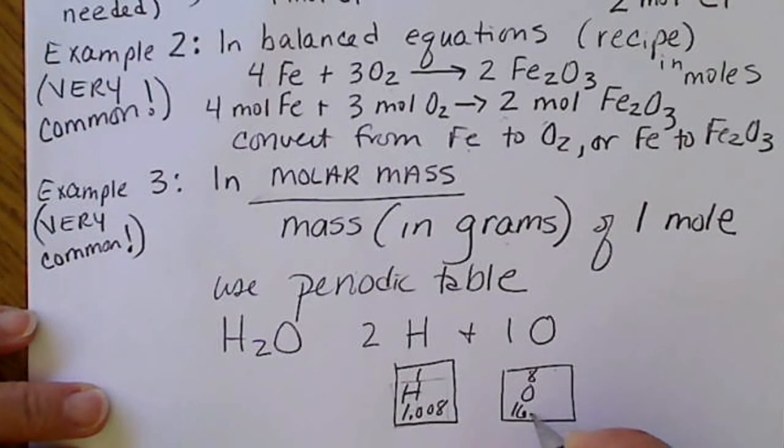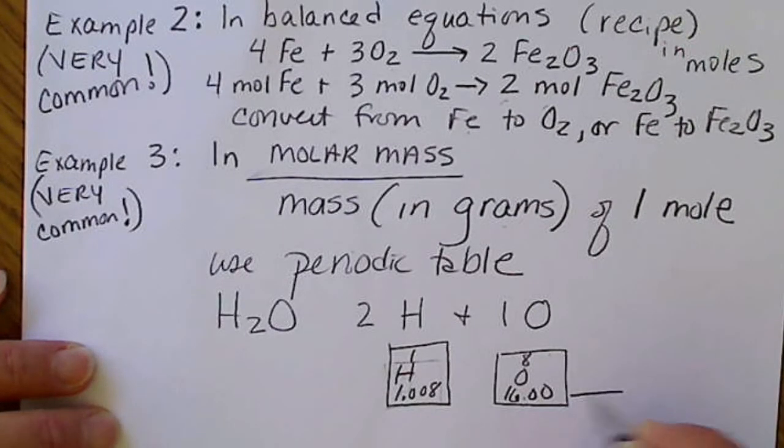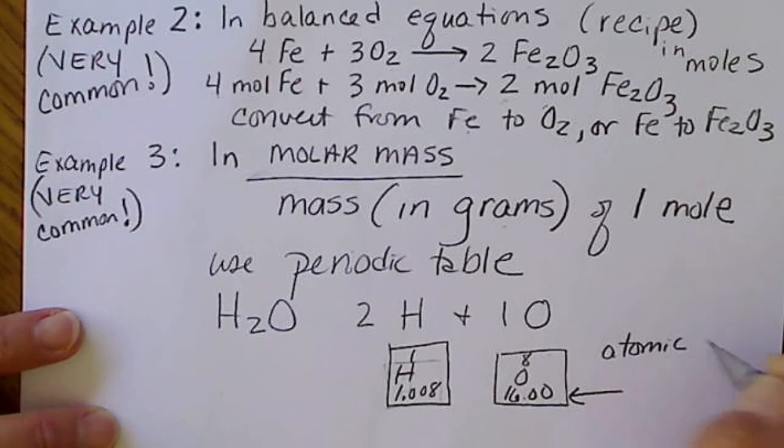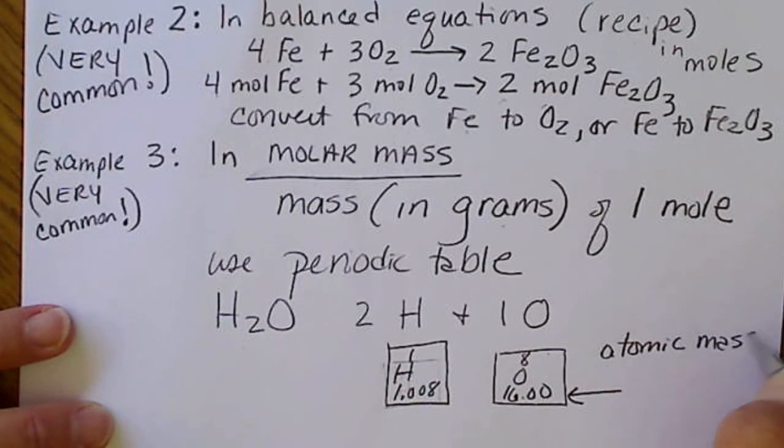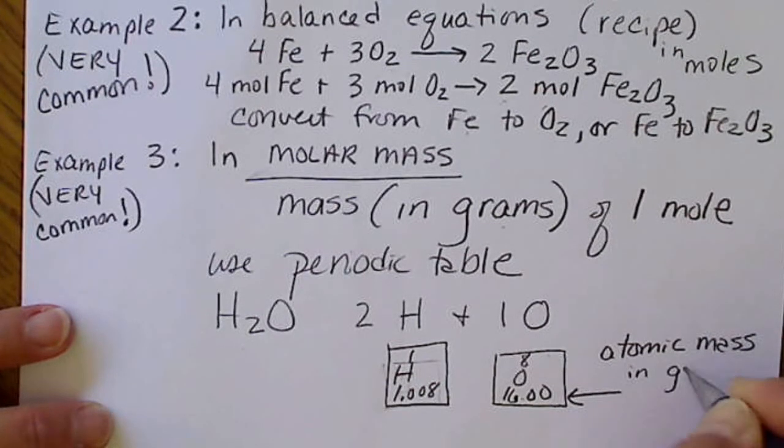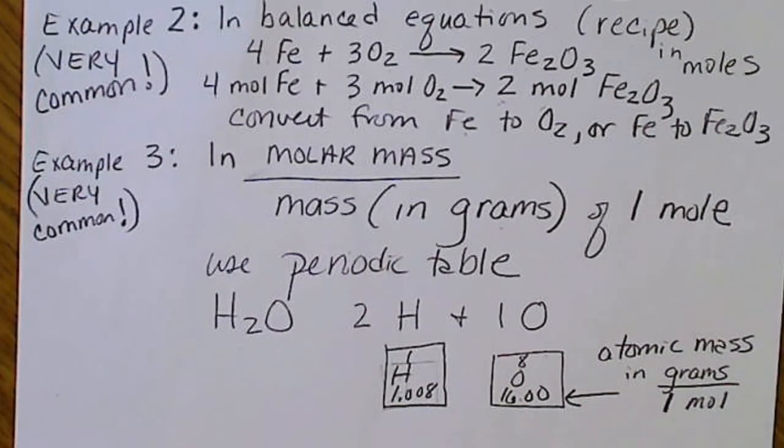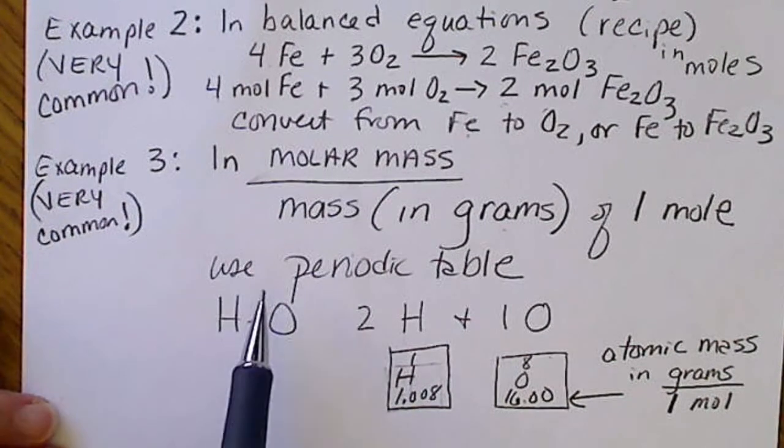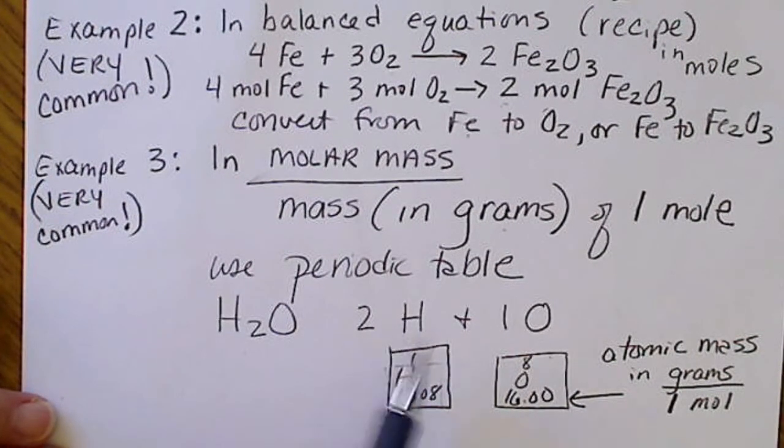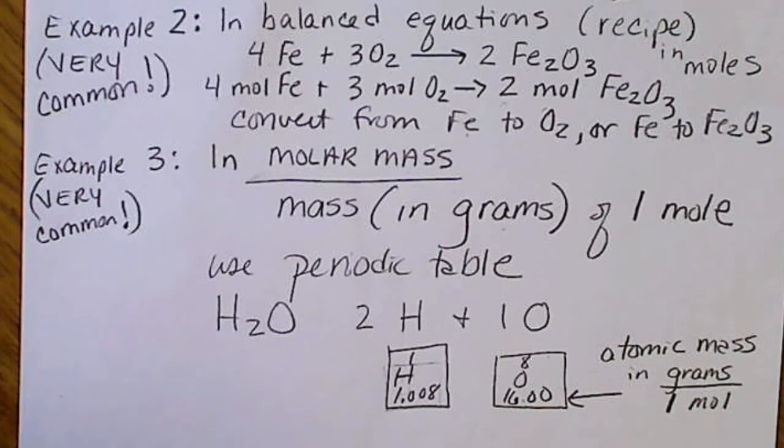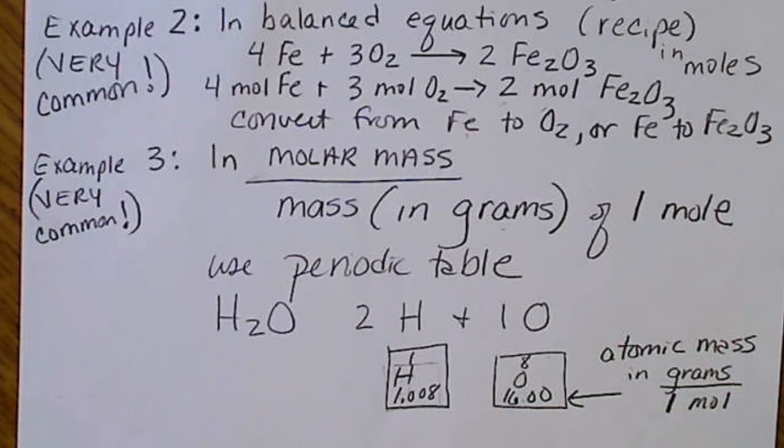we're going to see this number down here. So that number is the atomic mass, and this is really in grams per one mole. So we're going to practice calculating the molar mass of any atom or compound simply by using this mass that's listed on the periodic table. So we'll do that on the next slide.